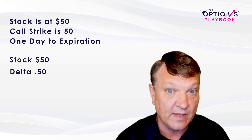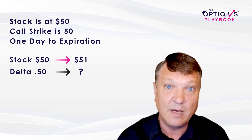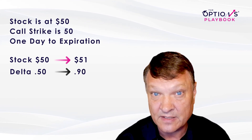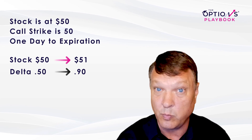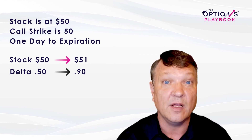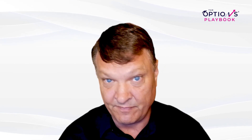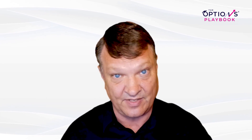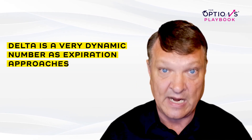Now the stock moves from $50 to $51 — a big move in one day. What is our $50-strike call option's Delta now? It would be close to 90. Why? With only one day remaining, and the option already one dollar in the money, the probability of finishing at least one cent in the money is extremely high, and Delta reflects that. On the downside, if the stock dropped one dollar, Delta would quickly approach zero.